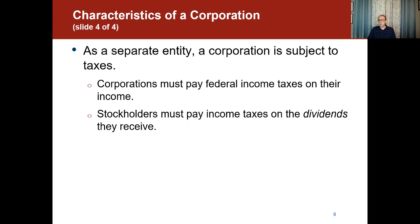As a separate entity, a corporation is subject to taxes, and that's one of the major disadvantages — corporations go through what we call double taxation. Corporations must pay federal income taxes on their income, and stockholders must also pay income taxes on the dividends they receive. So as a shareholder, you end up paying taxes twice: once through the corporation itself, and again when you receive dividends.